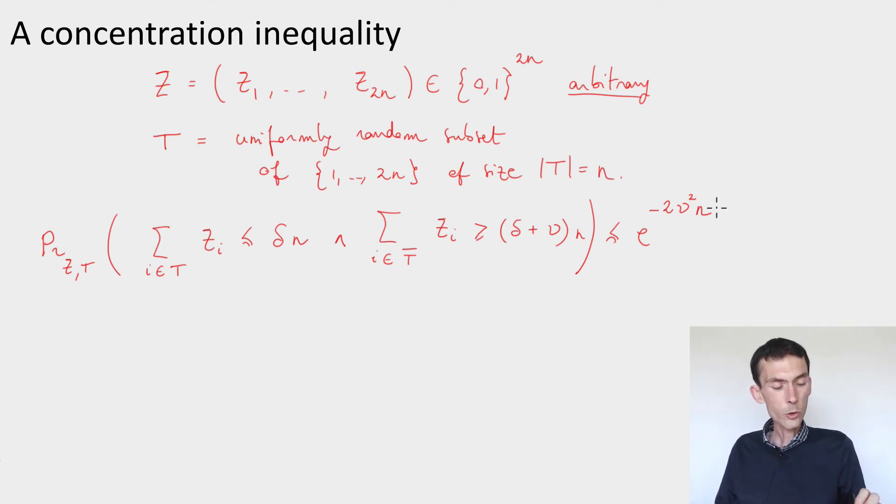It's not making any assumptions on the distribution of z. Whatever the z are, they can be very correlated. It's saying that if you choose a random subset t of locations, and if you observe that the sum of the zi's for the indices in t is small,